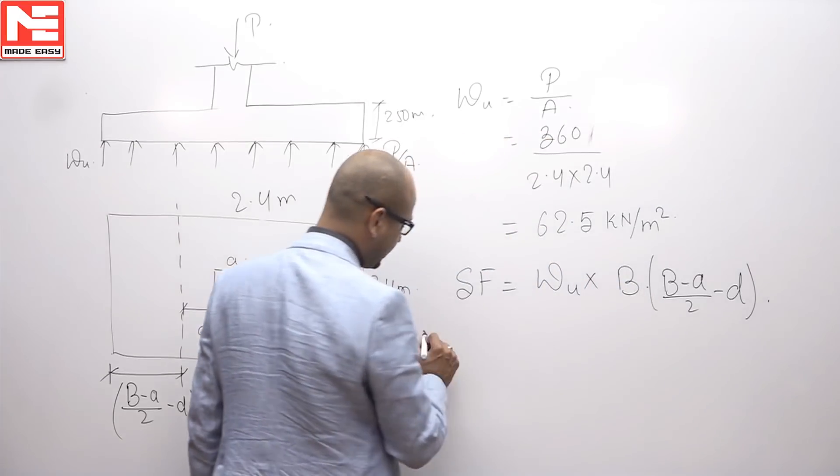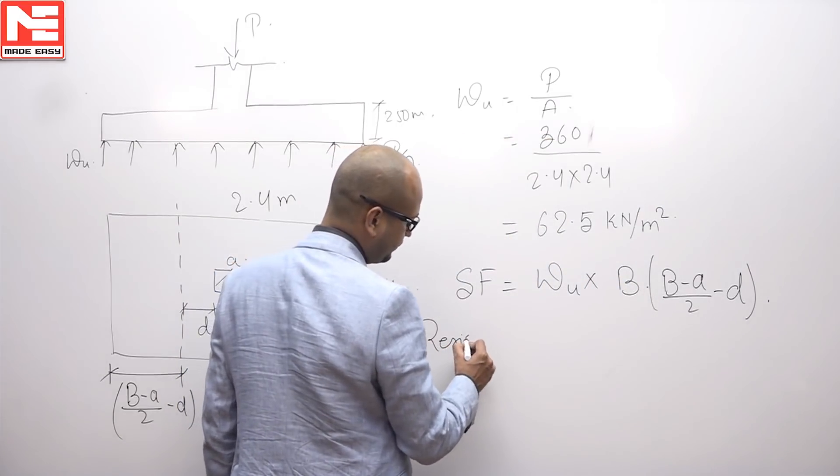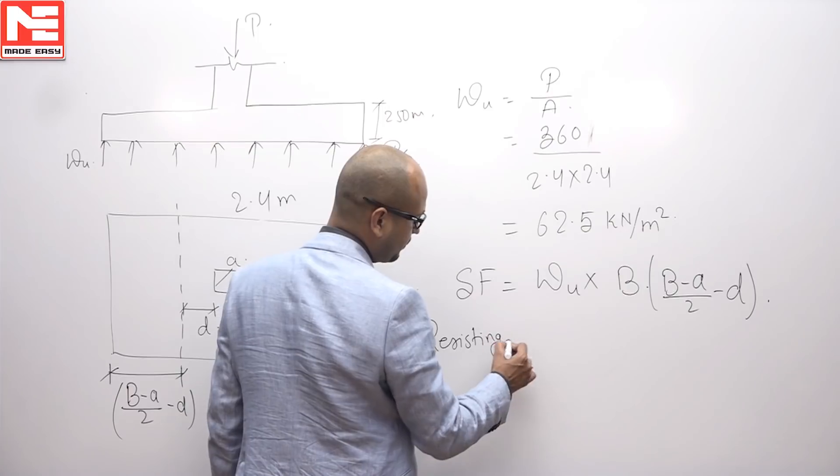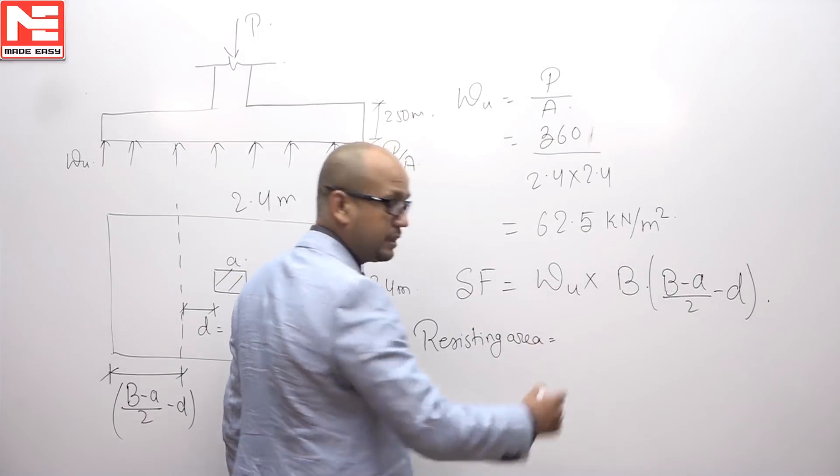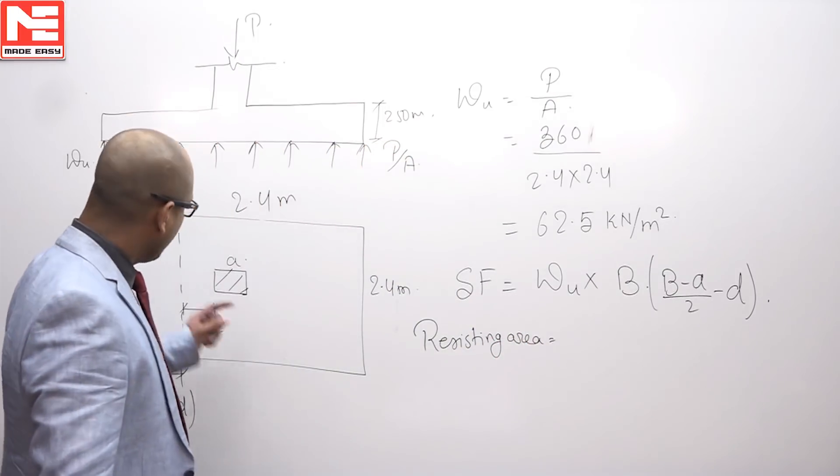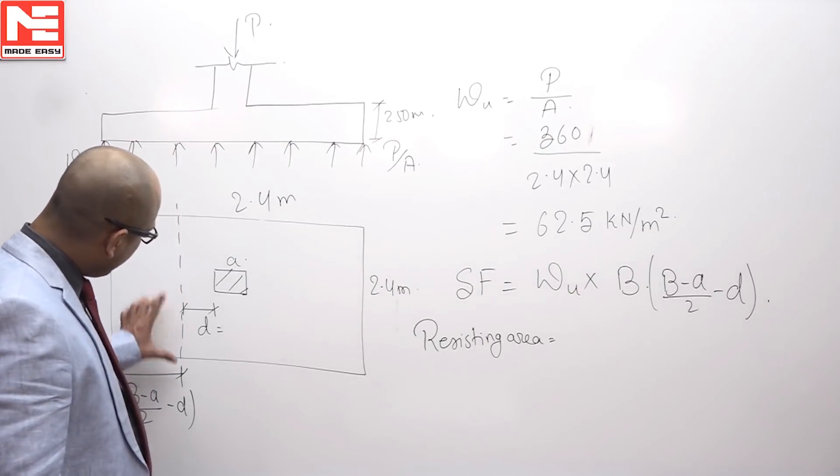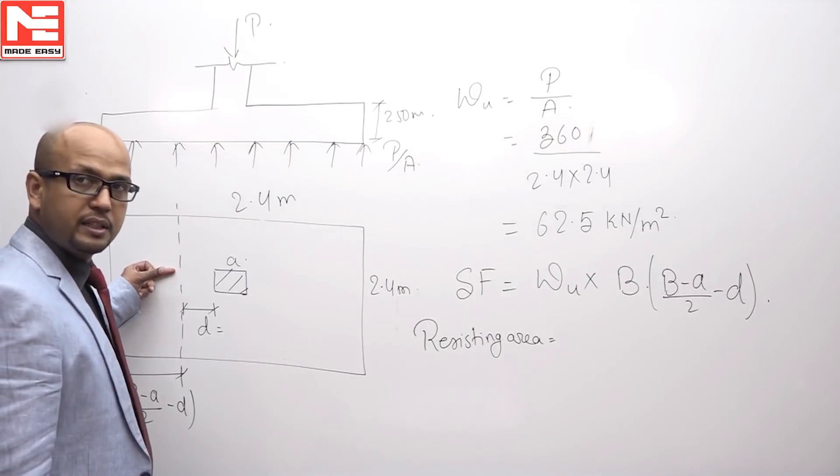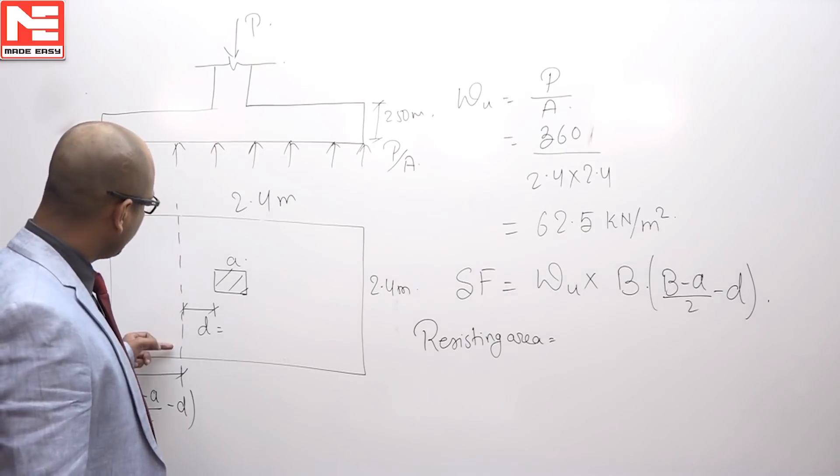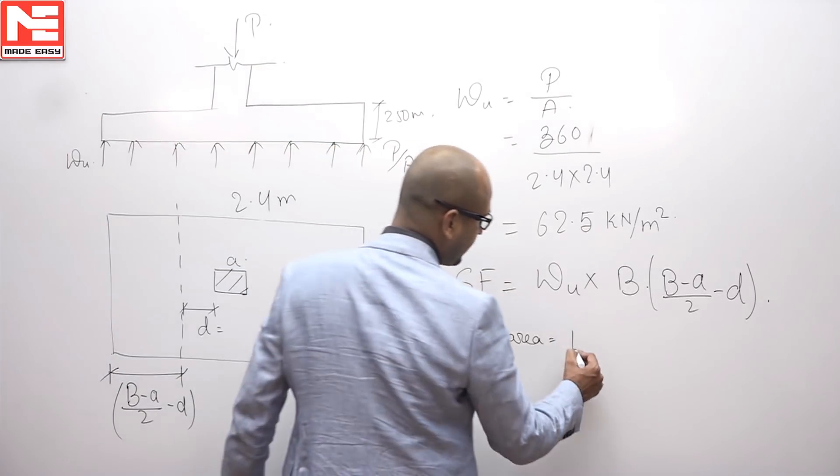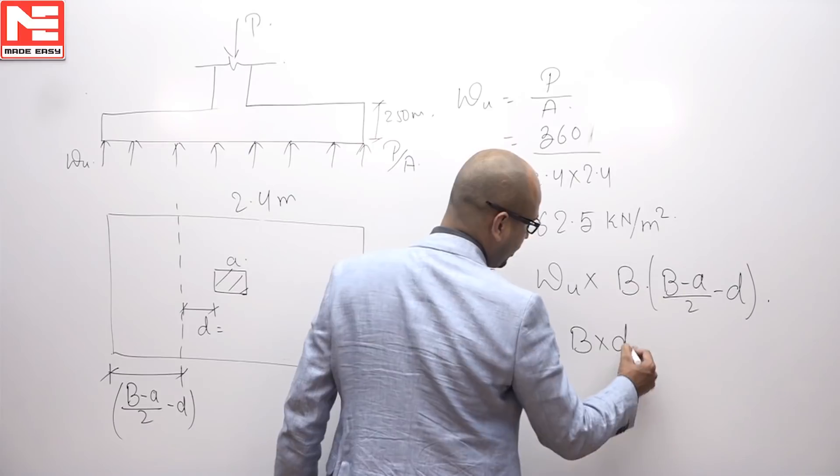And now resisting area, resisting area is this line length of this line multiplied by this thickness that will resist one way shear. Length of this line is simply B and depth is small d.